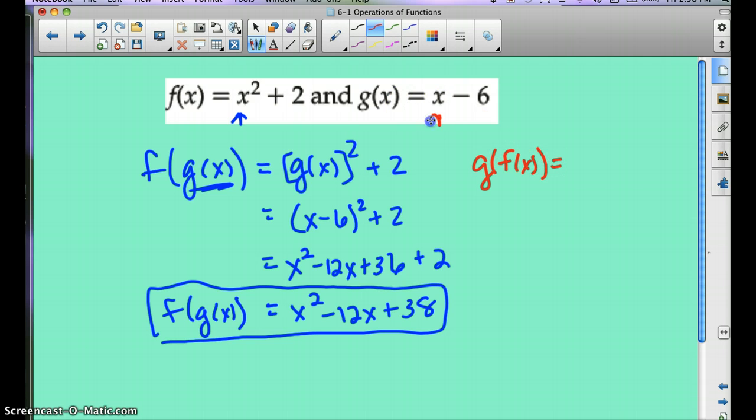So now we're going to plug in f of x into x. So whatever's inside here is what we're plugging in here. So it looks like we're going to have f of x minus 6. And so what is f of x? Well, it's x squared plus 2 minus 6. Can we do some simplifying? Of course. x squared minus 4. And that's what it is simplified.